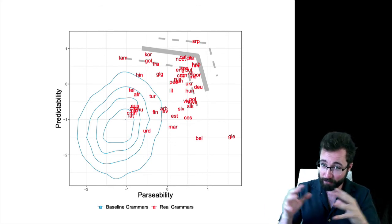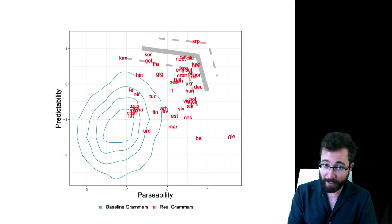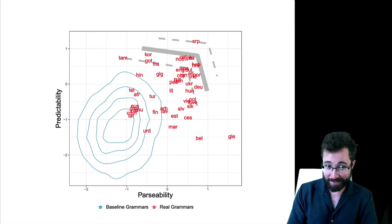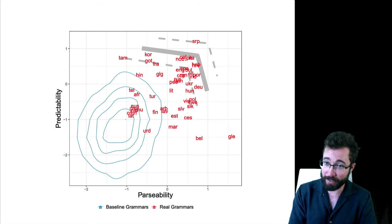In red, we have the actual positions of the grammars fit to the dependency tree banks. We see that for all the languages, they lie in the upper right quadrant here. They're all somewhat more optimized, either in terms of predictability or parsability compared to these random baselines. We also draw here an approximate efficient frontier of the best achievable parsability and predictability. That's the gray lines.